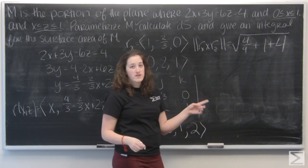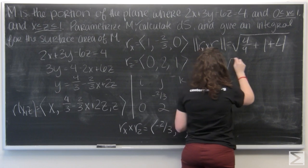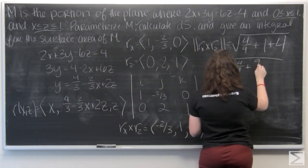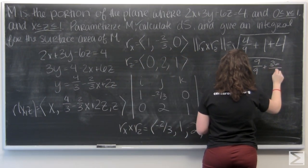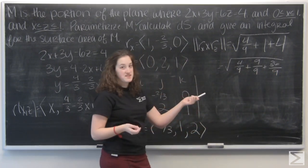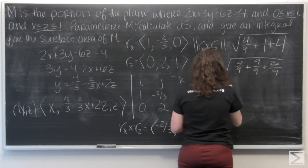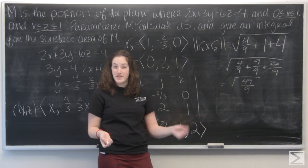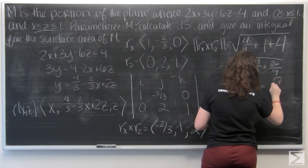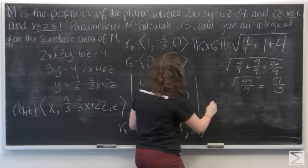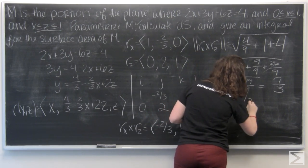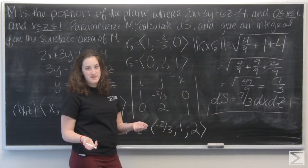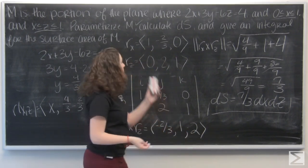So you can put these in your calculator. I'm going to go ahead and add them up. So 1 is like 9 ninths. And 4 is like 36 ninths. So I've got the square root of 49 over 9 which is going to be 7 thirds. So ds will be 7 thirds dx dz. So that's the second part.